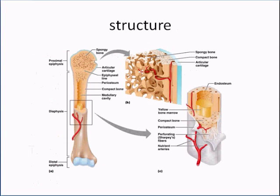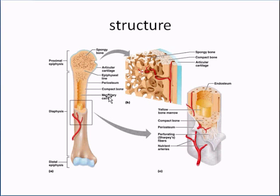This is the general structure of a long bone. Looking at the bottom, you have the epiphysis and the diaphysis. In the middle you have the medullary cavity. We're not going too deep into that — we're really focused on the general terms here.